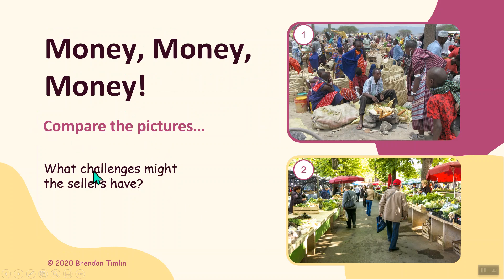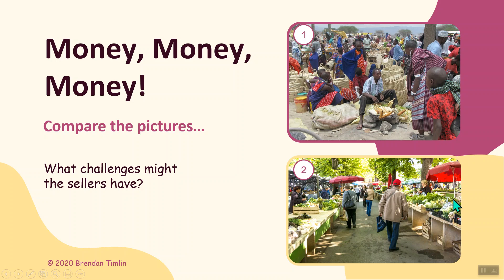Now we have two pictures. Compare the pictures and think about what challenges the sellers might have. In picture one, these people look like they're in Africa selling maybe vegetables. However, in picture two, these people are in maybe a richer country, somewhere in Europe, in a marketplace but also selling vegetables. The African sellers don't have very nice stalls - they're sitting down on some bags. On the other hand, the others have proper stalls, nicely organized, with umbrellas to shade themselves from the sun.